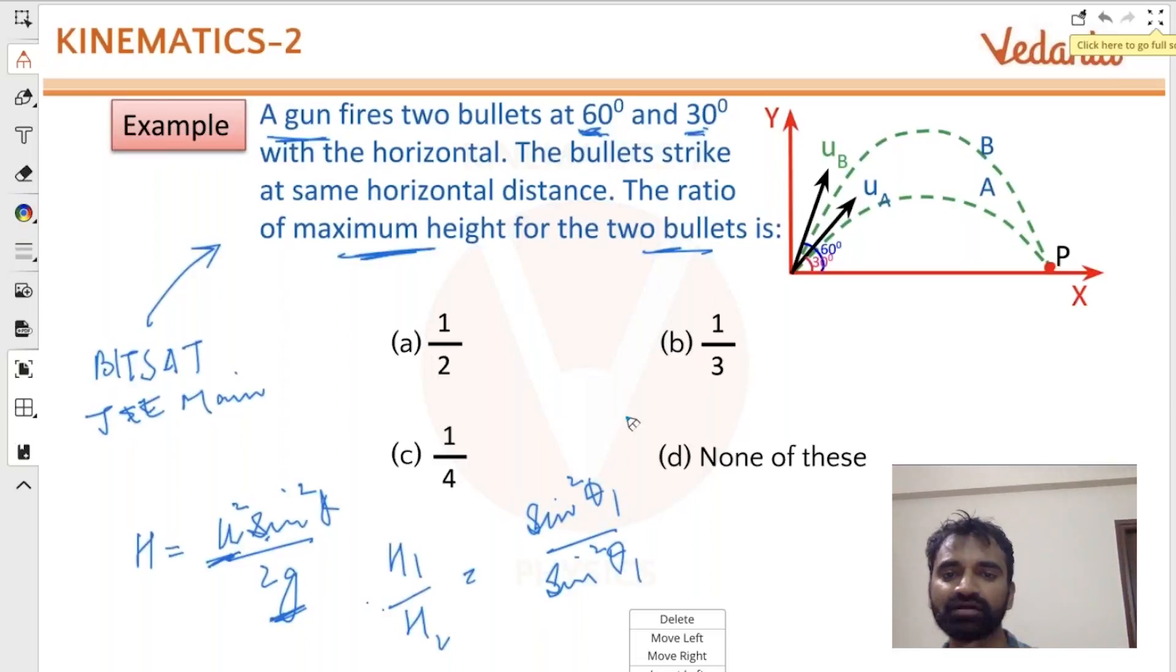I need to find out the ratio of sine square 30 degrees and sine square 60 degrees. Sine 30 is 1 by 2, so sine square 30 will be 1 by 4. Sine 60 is root 3 by 2, so sine square 60 is 3 by 4. I believe you'll get 1 by 3. B is the right answer. So very straightforward question.